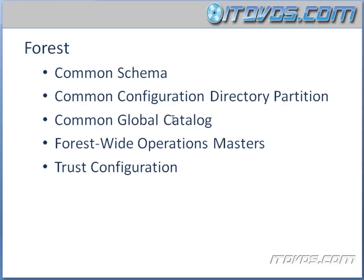Also, all of our domains in our forest are going to share a common global catalog, and we'll talk a lot about global catalogs later on. All of the domains in our forest are also going to share forest-wide operations masters. So we're going to have a domain controller that is the schema master and another that could be the domain naming master — both are operations master roles. The important thing to know is there's only going to be one domain controller for each of these roles in the forest.